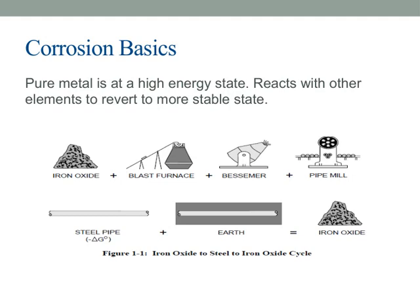Pure metal is actually in a high-energy state, meaning it has a lot of stored energy that makes it reactive. Because of this, it tends to react with other elements around it. When it reacts, it's essentially trying to revert to a more stable, lower-energy state. This is the fundamental driving force behind corrosion. Understanding this helps us see why metals corrode in the first place — it's all about seeking stability.